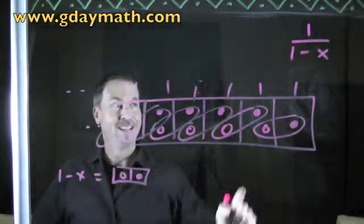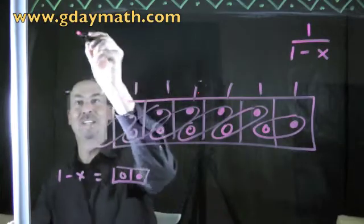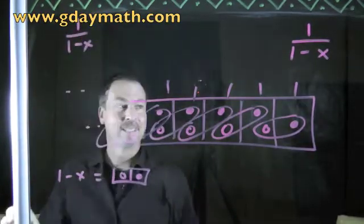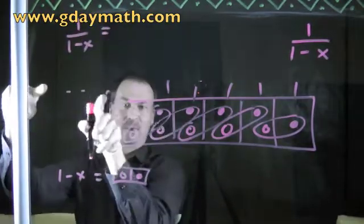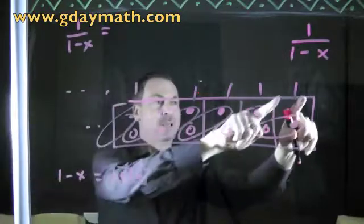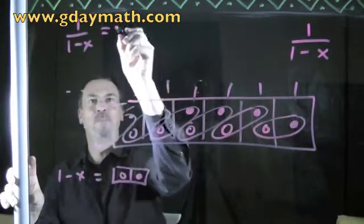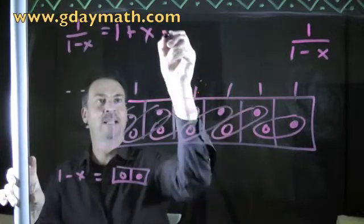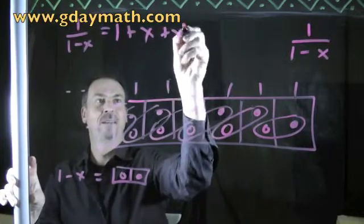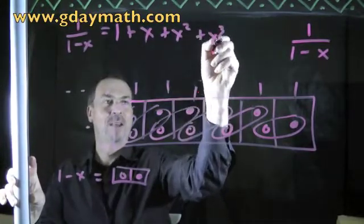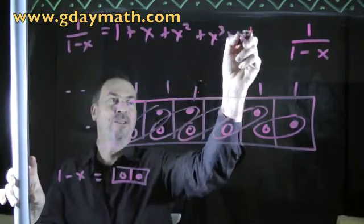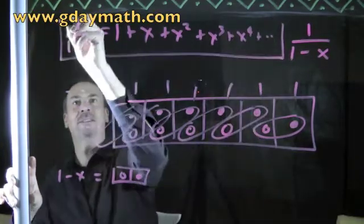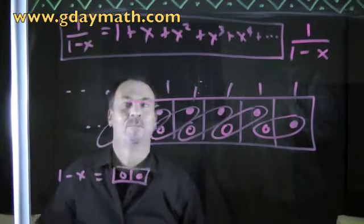So what's it saying? It's saying that when I take the number 1 and divide it by 1 minus x, I just have to know where to go from the left: I'm getting 1, and 1x, and 1x squared, and 1x cubed, and 1x to the fourth, and so on forever. So I drew dot dot dot to mean forever.